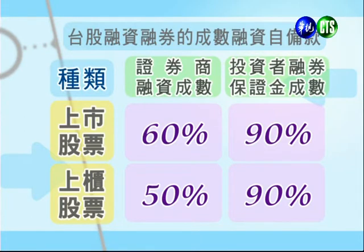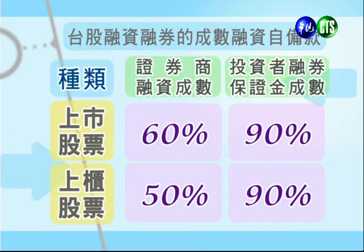目前台股融资融券的成数：以上市公司来讲，融资成数是六成，也就是买一档十万块的股票，你只要准备四万块自备款，可以借六万块。对于上柜股票融资成数比较低是五成，买十万块上柜股票可以借五万块，自备五万块。对于融券，不管是上市或上柜股票，目前保证金都是以九成计算。